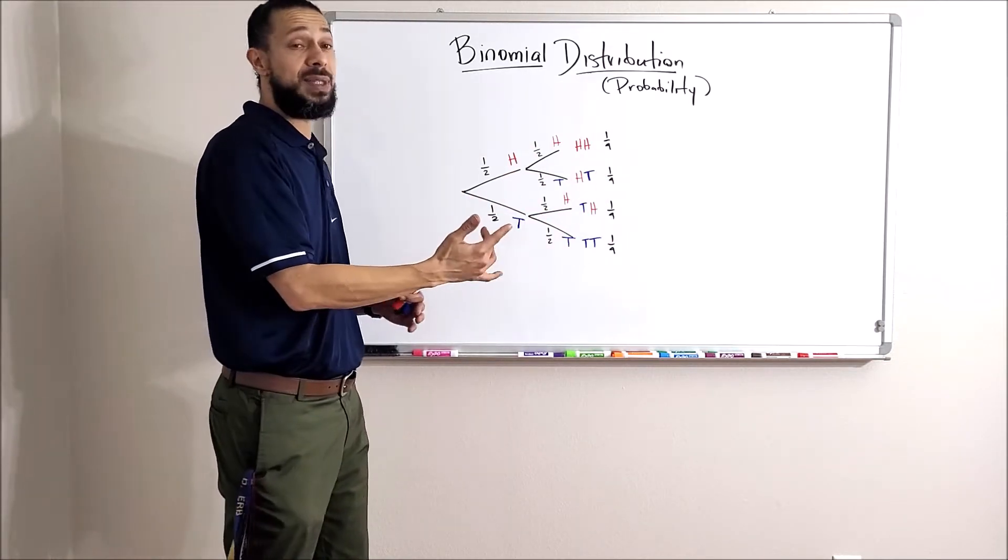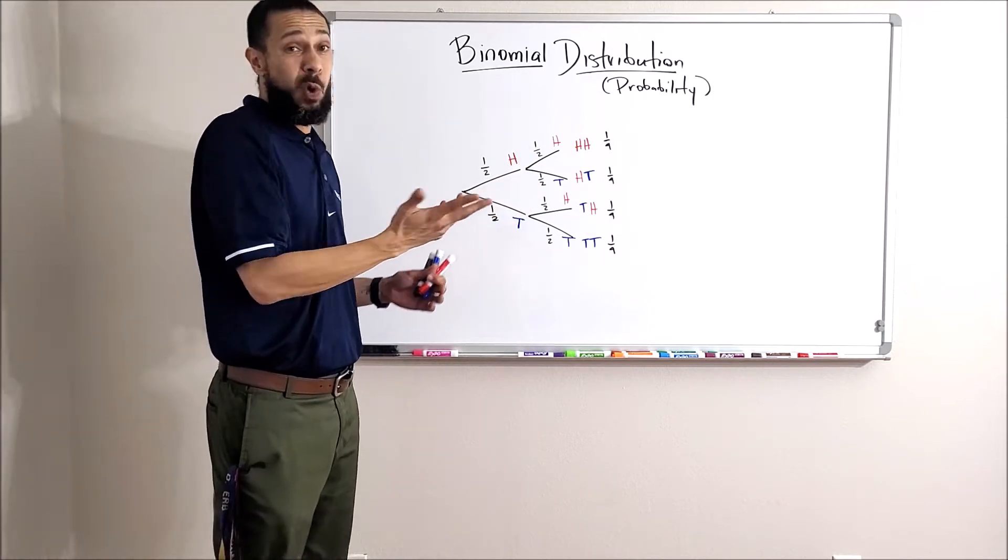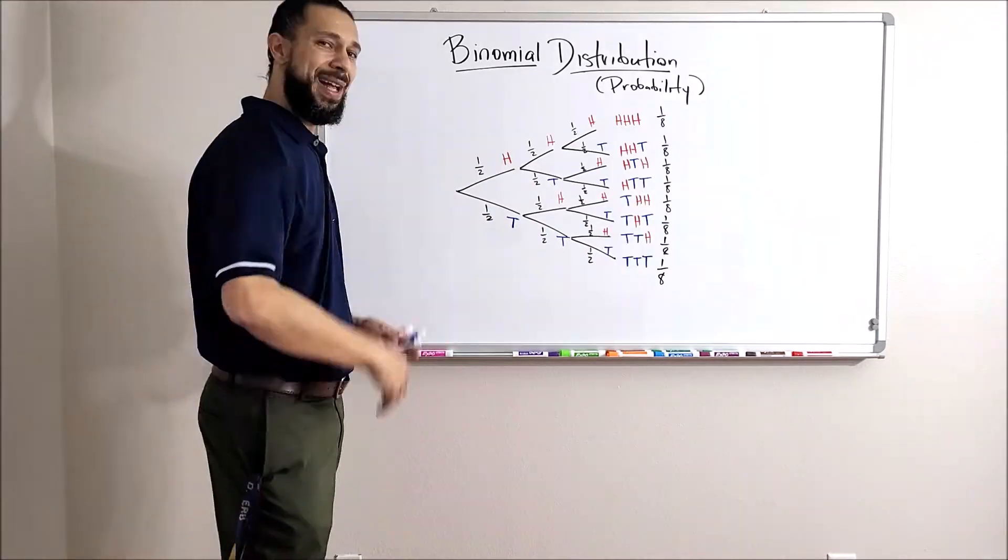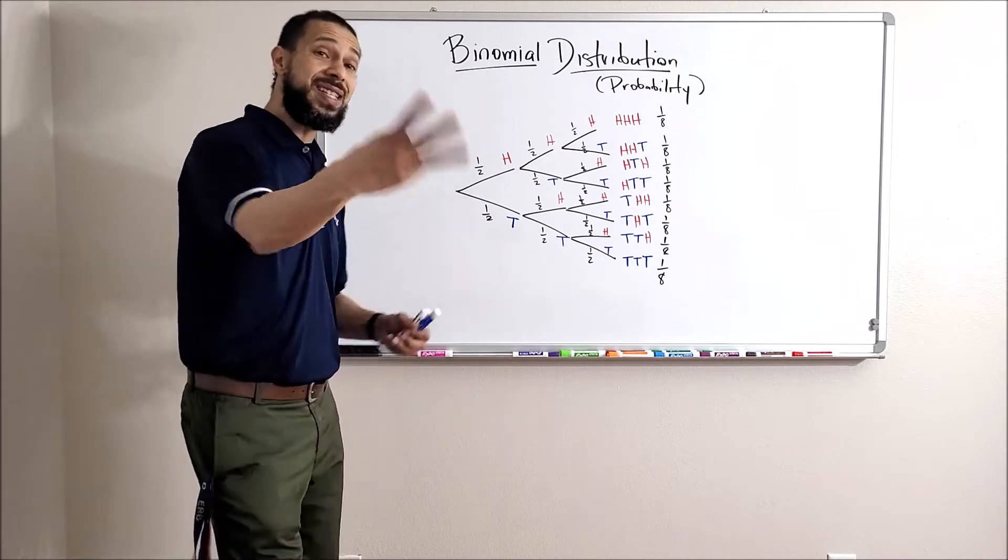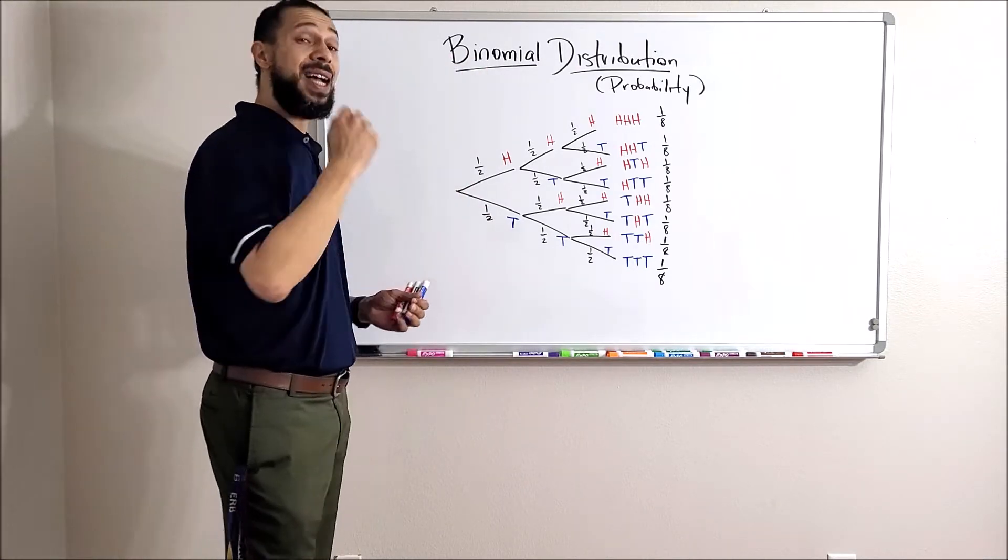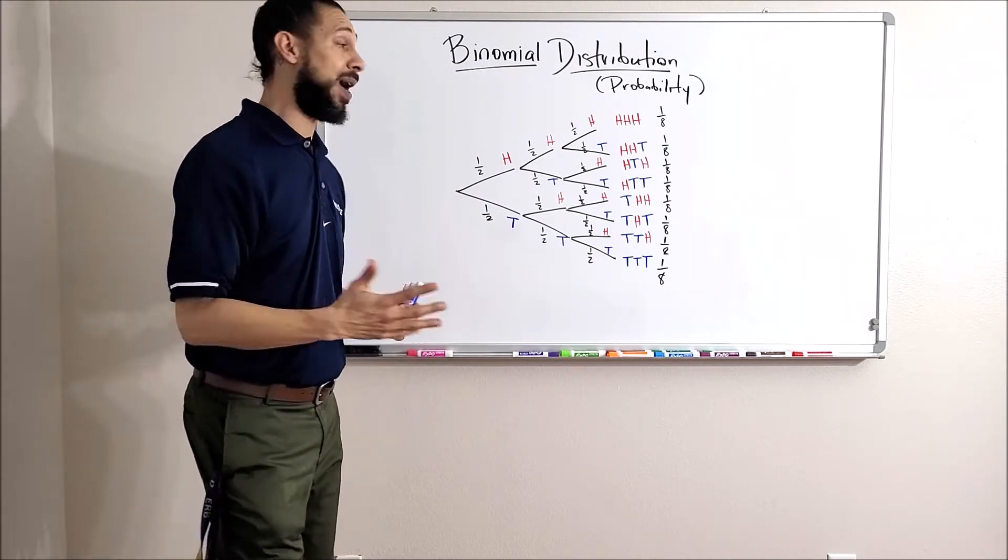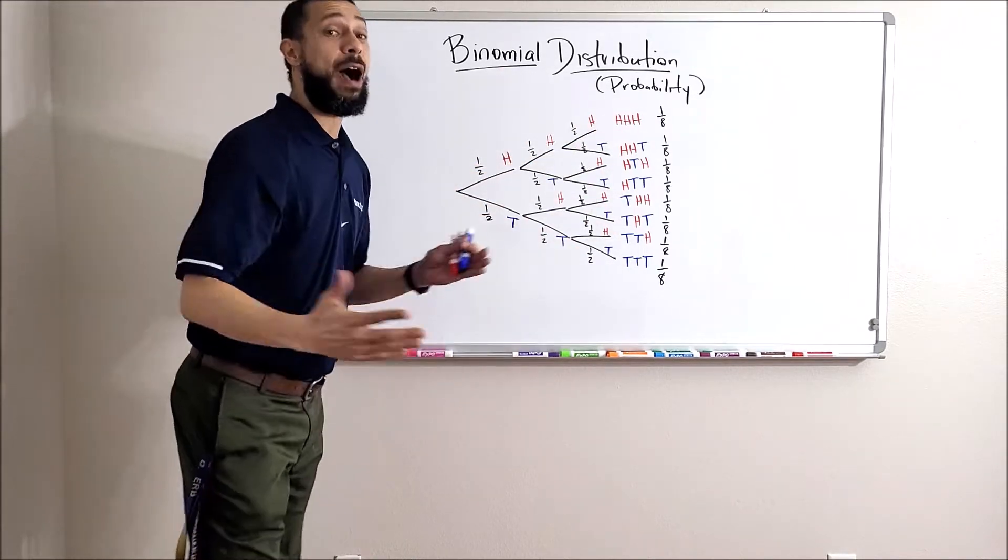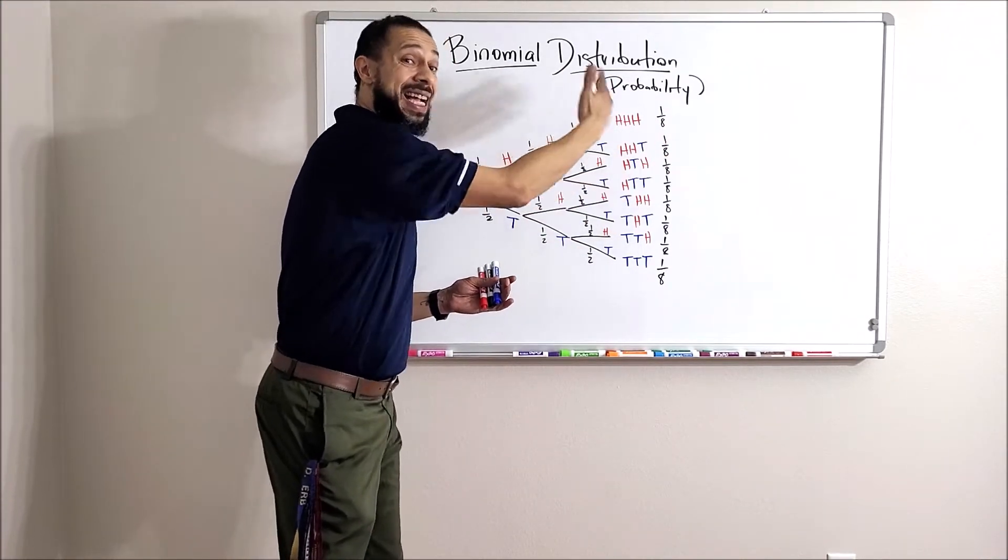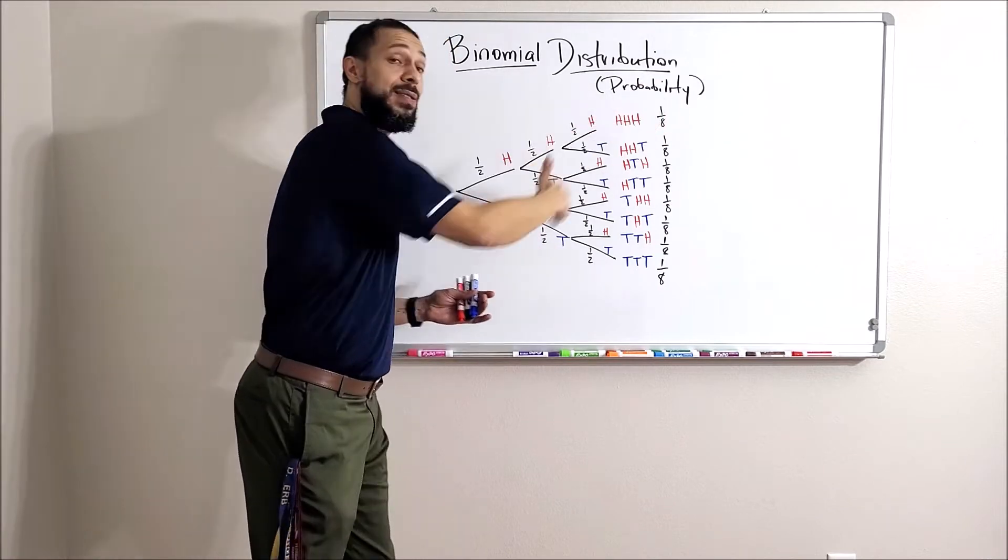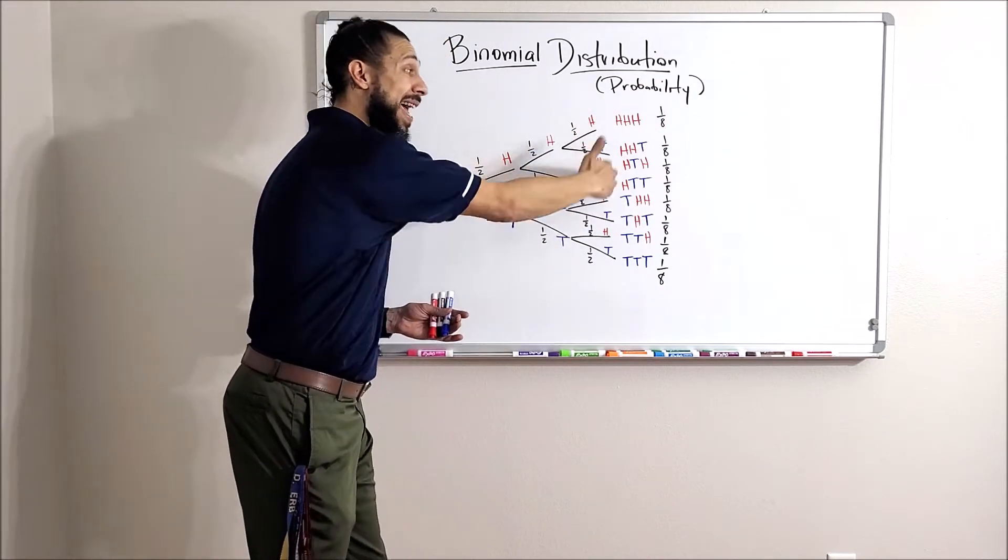We can do some simple math to figure out how many of these outcomes have two heads or one of each. If we add one more coin toss, three coin tosses. Now if I toss the same coin three times, these are all of the outcomes.